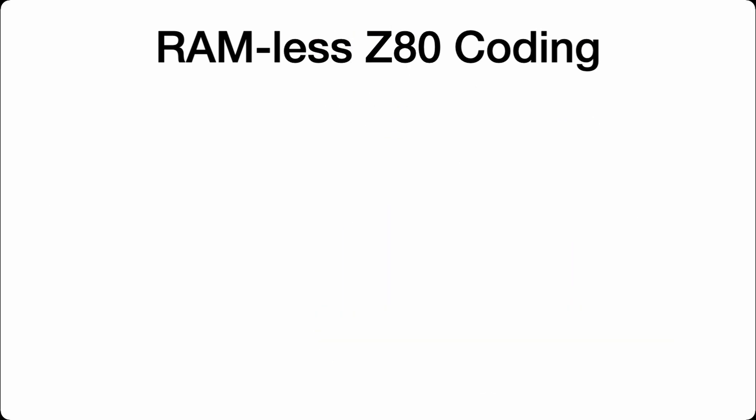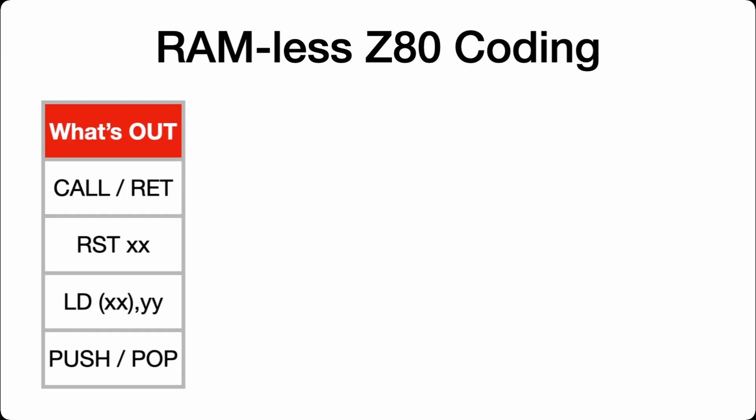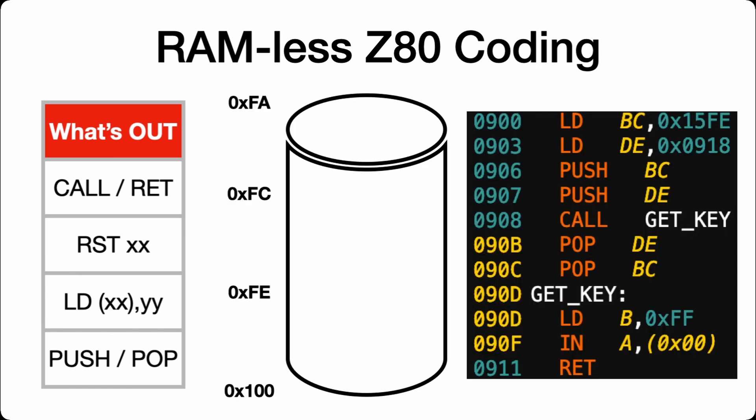So when dealing with no RAM on the CPU, what's in and what's out? This is what's out: we can't use the CALL and RETURN operators, nor the RESTART — which is essentially the same as CALL and RETURN but uses only one byte. You can't save any data to memory using those brackets, so a LOAD for instance, and you can't use PUSH and POP to save registers onto the stack.